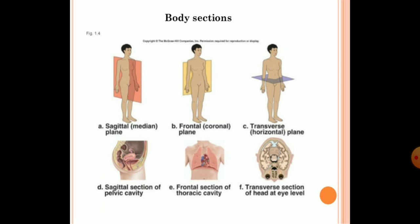Important body section terminologies: sagittal or median section — cutting the body into equal halves from the center. Frontal or coronal section — a cut from the shoulder region, dividing front and back. Transverse section — a horizontal cut dividing the body into upper and lower portions. For example, a sagittal section of the pelvic cavity shows the organs present there; a frontal section of the thoracic cavity shows the lungs; a transverse section through the head shows the brain and eye regions.